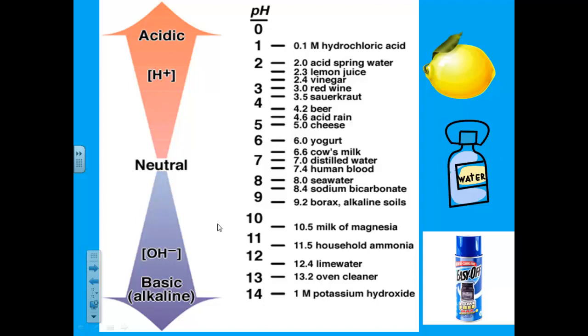Here is the pH scale. This is how you know the pH — how acidic, where acidic would be one, or basic a substance is.